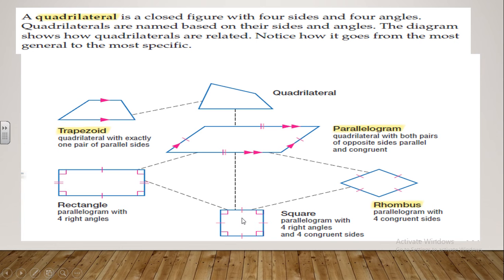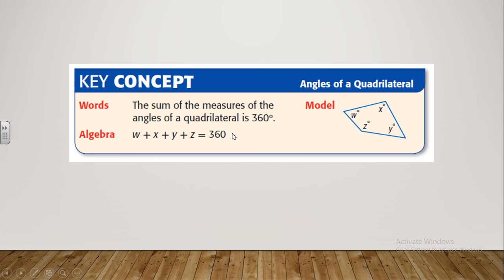We have the square, which has four sides equal in length and four right angles. We have the rhombus, which has four sides equal in length but no right angles. So the difference between a rhombus and a square is that the square has four right angles. This information is very important and we will use it a lot.